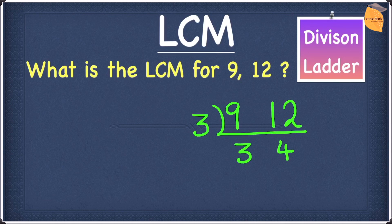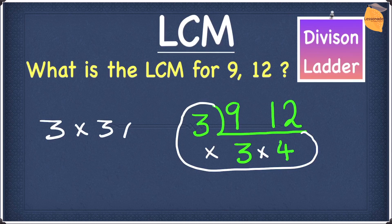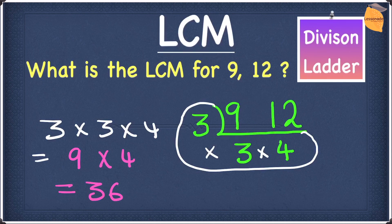We won't carry on further because there isn't any common factor between three and four. So this means we will just multiply the three, the other three, and the four — so three times three times four. Three times three is nine, and nine times four gives you an answer of thirty-six. So the LCM for this question is thirty-six.